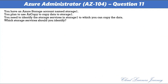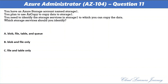Question 11. You have an Azure storage account named Storage1. You plan to use AzCopy to copy data to Storage1. You need to identify the storage services to which you can copy the data. Options: A. Blob, File, Table, and Queue. B. Blob and File only. C. File and Table only. D. File only. E. Blob, Table, and Queue only. The correct option is B, Blob and File only. AzCopy is a command-line utility used to copy blobs or files to or from a storage account.